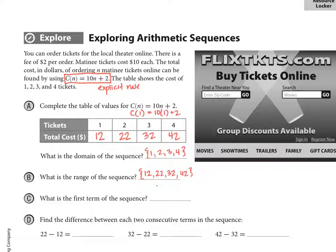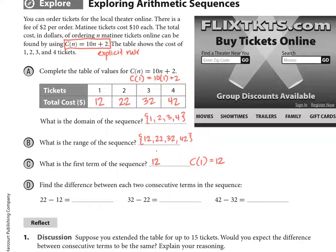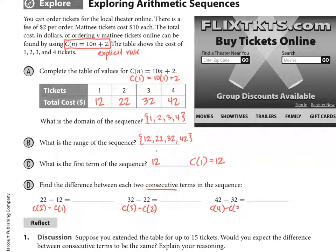The first term of the sequence is 12 because, using function notation, C of 1 equals 12. So our first term is 12 because that's how much it costs for 1 ticket. And we're asked to find the difference between each two consecutive terms. Consecutive means numbers next to each other — so C of 2 minus C of 1, then C of 3 minus C of 2, and C of 4 minus C of 3. Notice we're always subtracting a term minus its previous term, and we always get 10.